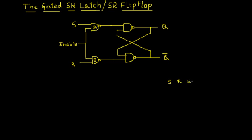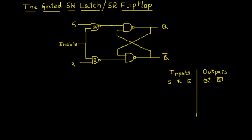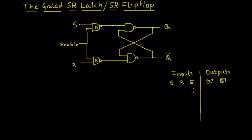Now we will try to write the truth table for the gated SR latch. S, R, and Enable are the inputs, and we have two outputs: Q-plus and Q-plus bar. The only difference between the SR latch and the gated SR latch is the presence of an enable input. Through the enable input we can have complete control over the operation of the SR latch. The enable input could be either 0 or 1. First I'll make the enable input 0 and not bother about the other two inputs S and R.